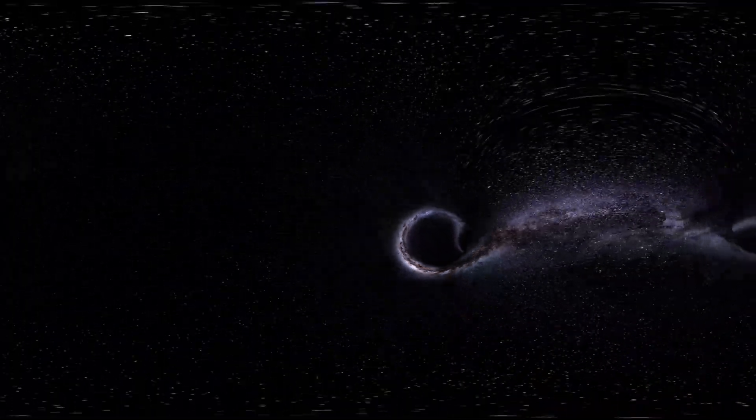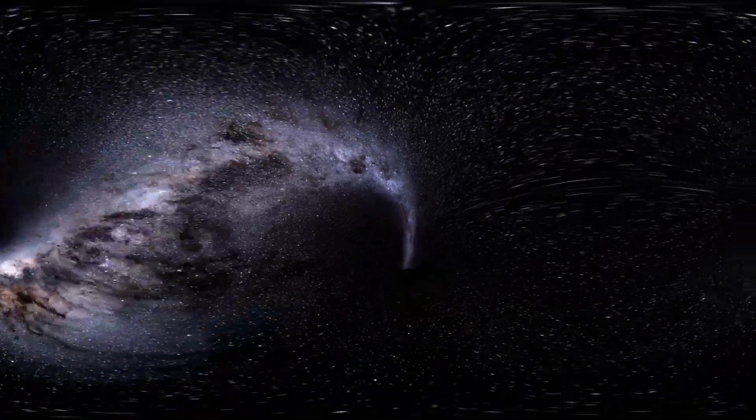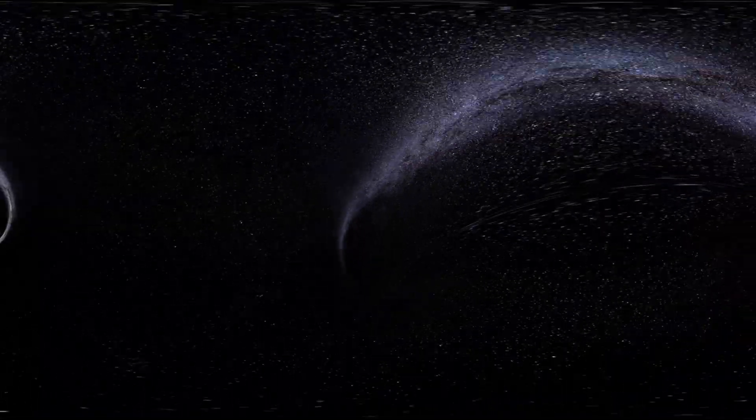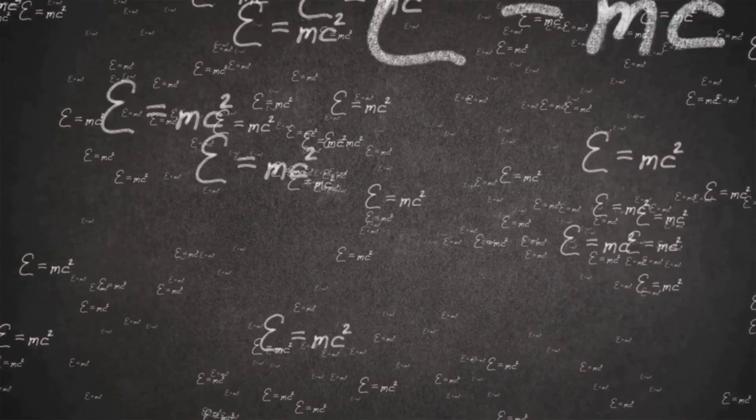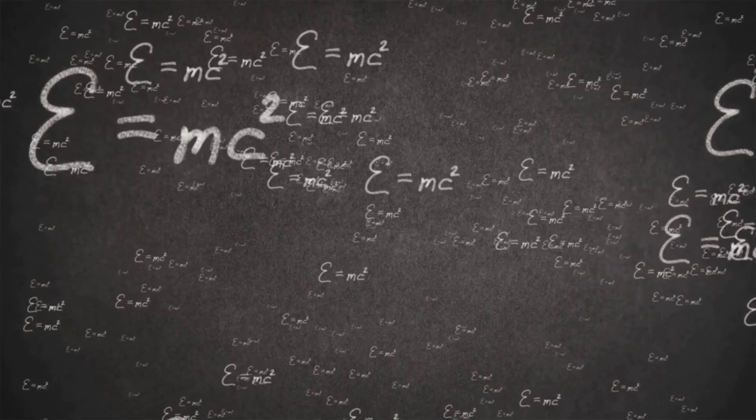The concept of wormholes, or Einstein-Rosen bridges, suggests that black holes might connect to white holes in distant parts of our universe or even other universes entirely. Einstein's field equations allow for these theoretical tunnels through space-time, though we've never observed one directly.